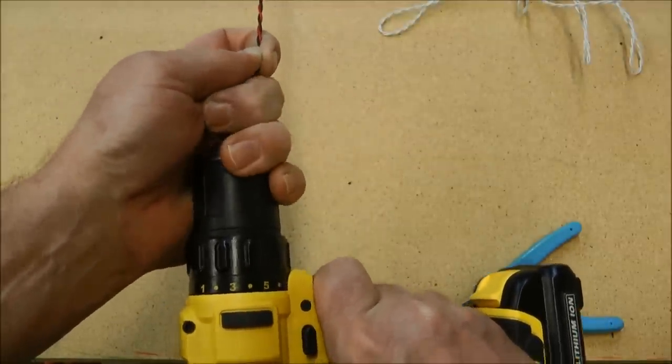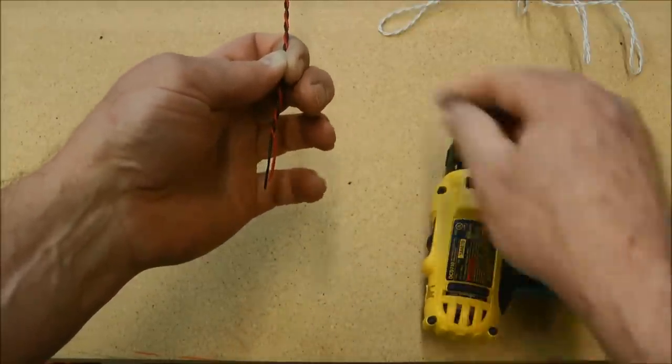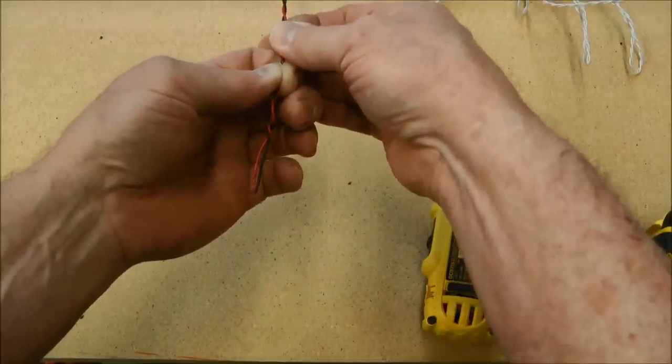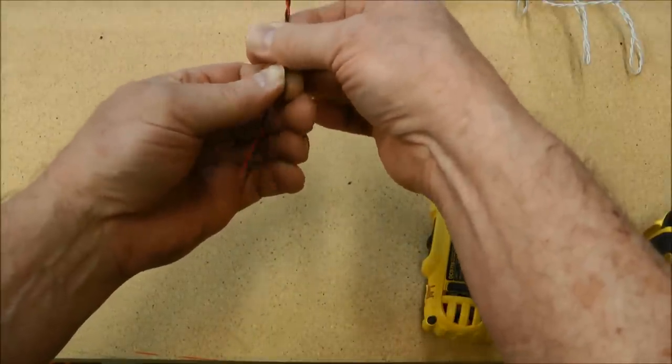I'm not going to let the wire go because there is a lot of spring back in here. Now I remove the chuck and I'm going to gently release the tension at my grip on the wire. And as you can see, it will spring back.